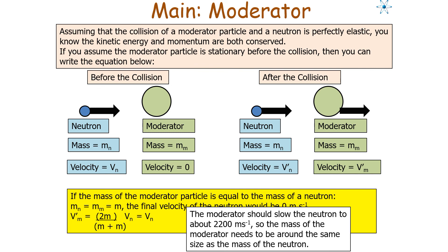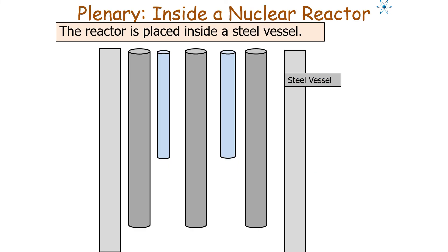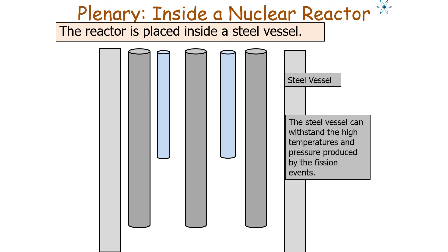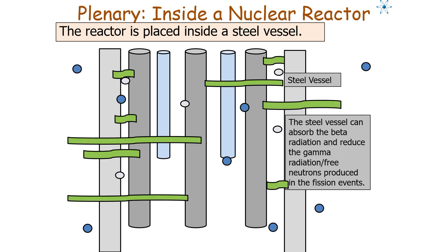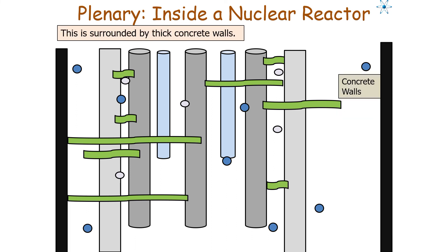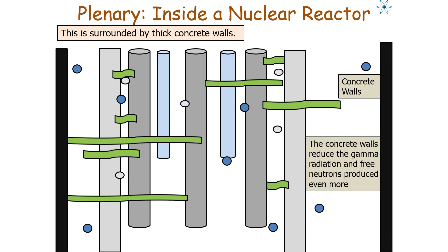The mass of the moderator needs to be around the same size as the mass of the neutron. The entire reactor is placed inside a steel vessel, which can withstand the high temperatures and pressures produced by fission events, and can absorb beta radiation and reduce gamma radiation and free neutrons. The steel vessel is also surrounded by thick concrete walls, which reduce gamma radiation and free neutrons even further.